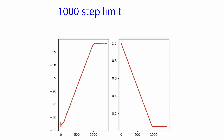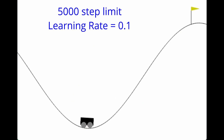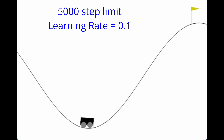I decided to bump the step limit up to 5000. From looking at the logs I can see that the car is able to get to the flag within about two to four thousand steps, so that's why I chose 5000. But still, why is the car even worse than before?